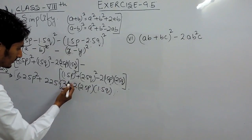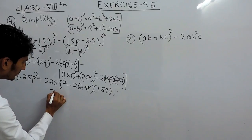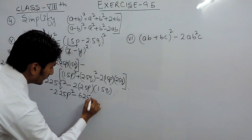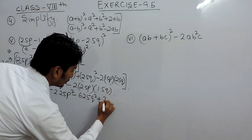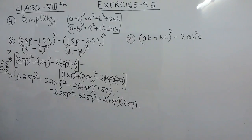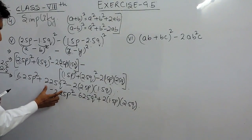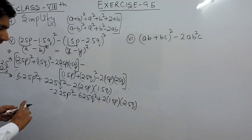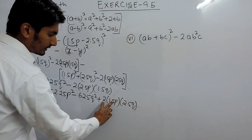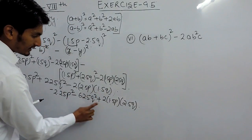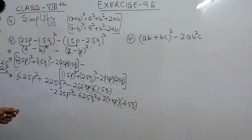After opening the bracket: 6.25p² remains, minus 2.25p² (sign changed), minus 6.25q² (sign changed), and plus 2 × 1.5p × 2.5q (sign changed to positive). Now the p² terms are like terms and can be combined, the q² terms are like terms, and the middle cross terms are like terms that cancel — they are the same with plus and minus signs.